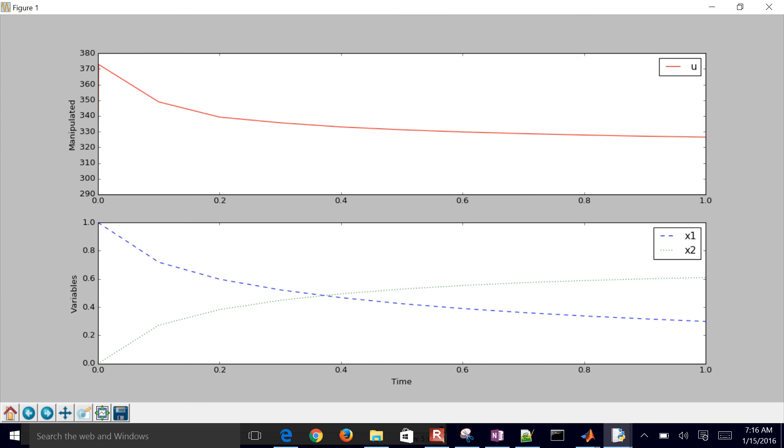And there is the Python result. So here is the optimal solution for the temperature profile over time to maximize x2. So I want to get x2 as high as I can. I want to get it, right now it's about 0.6 or so.